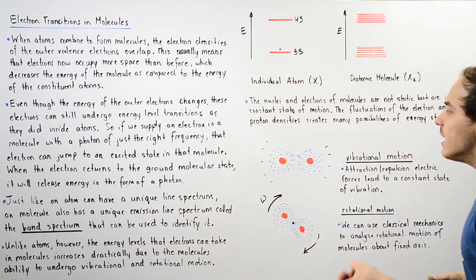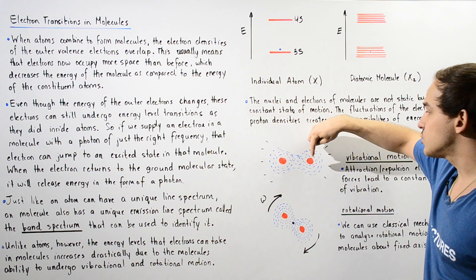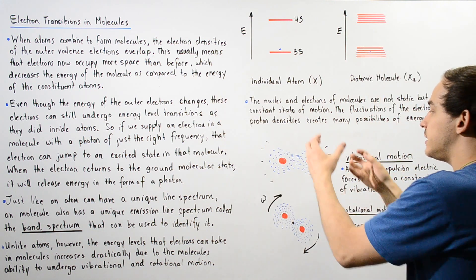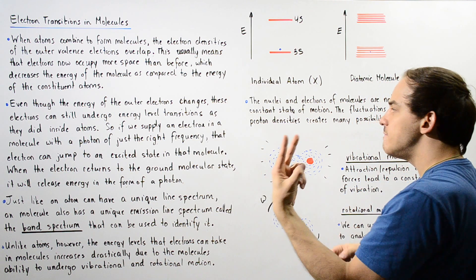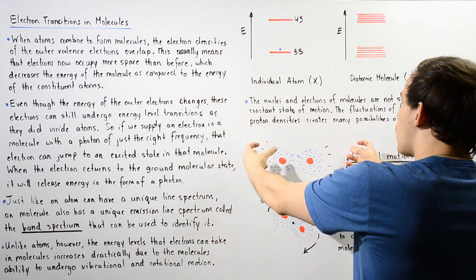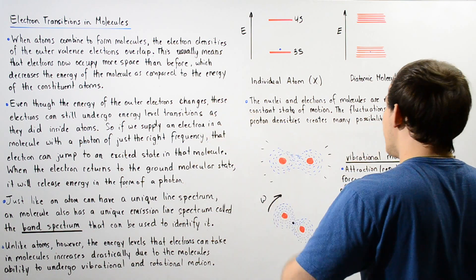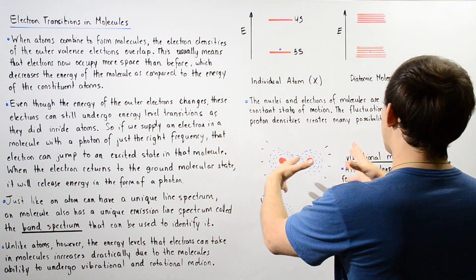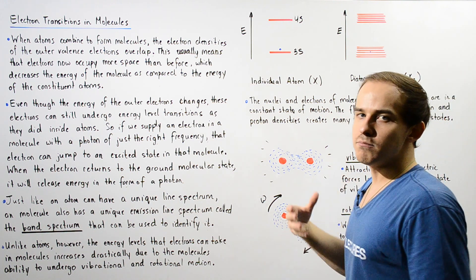So let's, for example, take the diatomic H2 molecule. We have one proton in this nucleus, one proton in this nucleus, and we have the combined overlap of the electron densities of our two electrons, as shown by this blue region. And it fluctuates constantly as a result of attraction and repulsion electric forces between the positive and negative charges. This is known as vibrational motion.